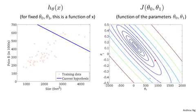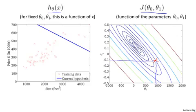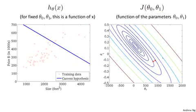So let's see this algorithm in action. Here are plots of the hypothesis function and of the cost function J. Let's say I've initialized my parameters at theta_0 equal to about 900 and theta_1 equal to about −0.1. This corresponds to h(x) = 900 − 0.1x. Now, if we take one step of gradient descent, we move from this starting point a little bit down and to the left, to that second point. And you notice that my line changed a little bit.